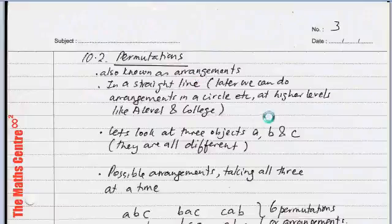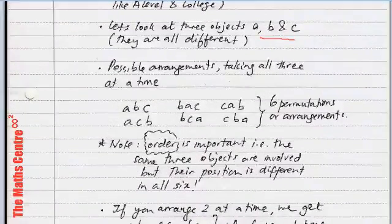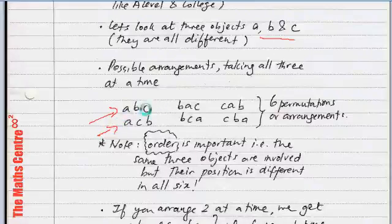Let's look at three objects: A, B, and C. They are all different. What we are going to do is consider all the possible arrangements, taking all three at a time. For example, we can have in our set of permutations, ABC, BCA, CAB, ACB, BAC, and CBA.